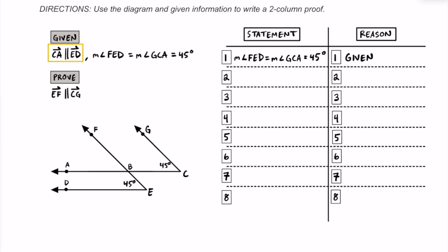Next, we know that ray CA is parallel to ray ED, and this is given, so we know these two rays are parallel.